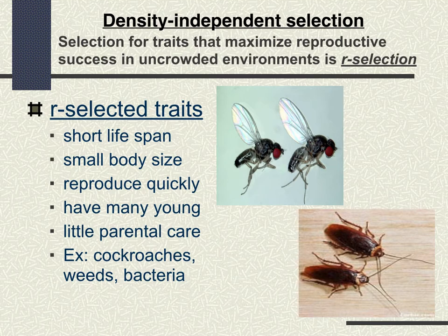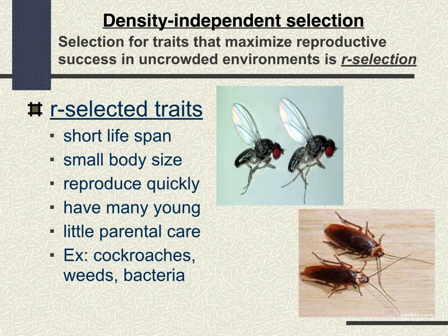Along with these life history traits, there are two types of selection to go over. Density independent selection, or R-selection, involves traits such as short lifespan, small body size, reproducing quickly, producing tons of offspring — things like cockroaches, weeds, and bacteria. These organisms also have high offspring mortality. This strategy is optimized for maximum reproductive success in uncrowded environments.